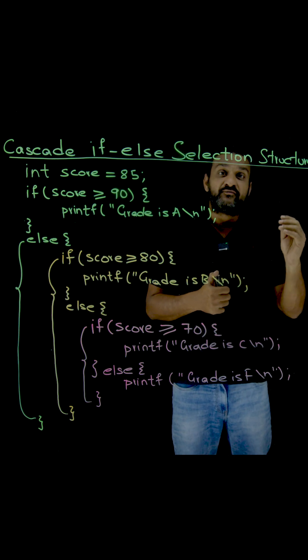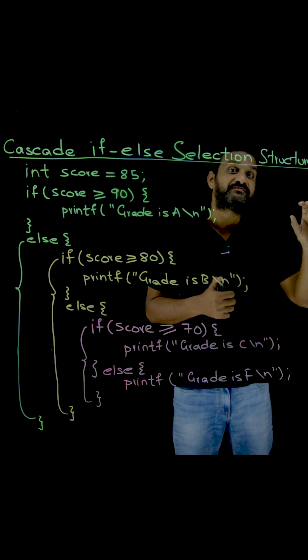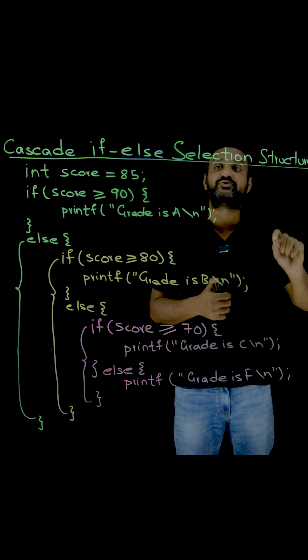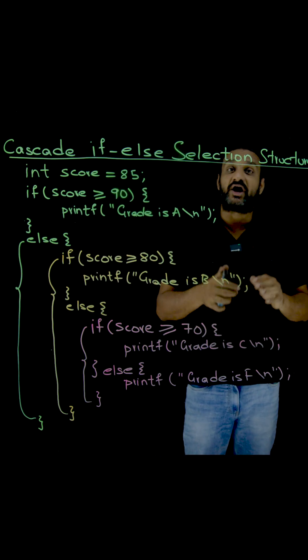In the real world, while writing programs, we may have to make a choice from multiple alternatives. How the choice can be made is by using this cascade if-else selection structure.